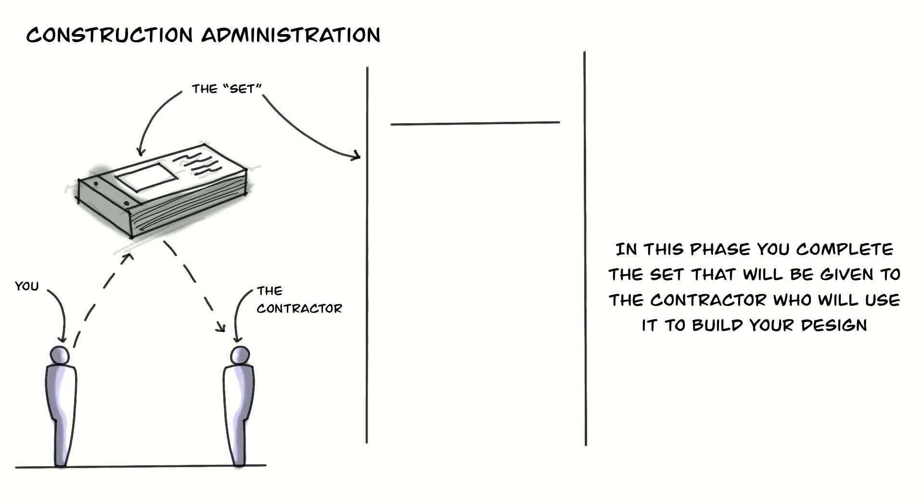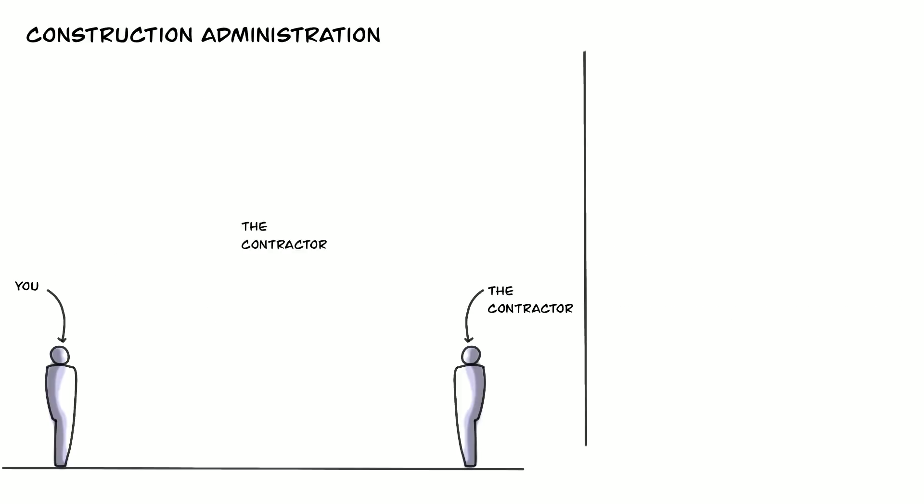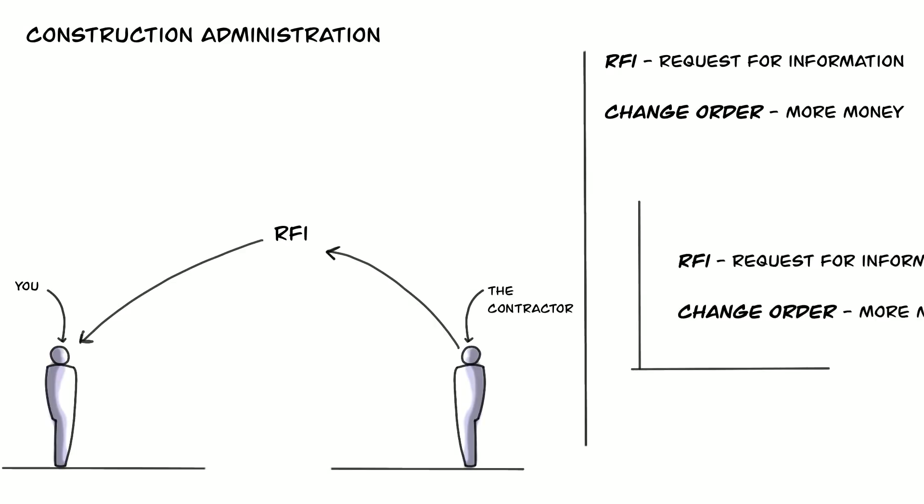The last phase that we're going to take a look at is the construction administration phase. During this phase, the contractor will work to complete building the project. It is common for the building team to have questions during this phase, and they will often contact the architect using something called an RFI, which simply stands for request for information.